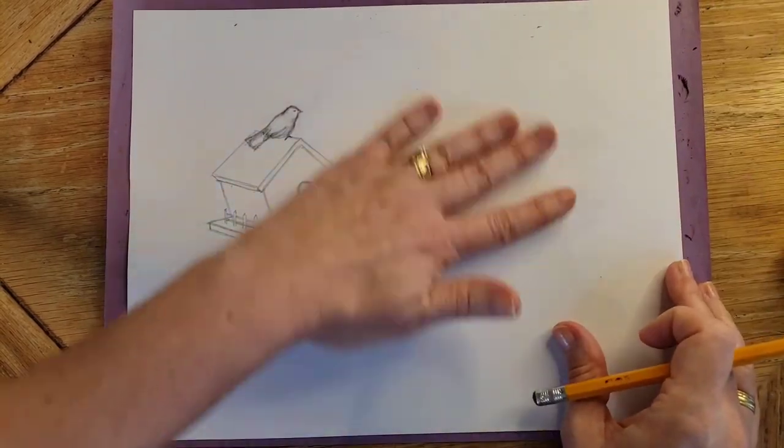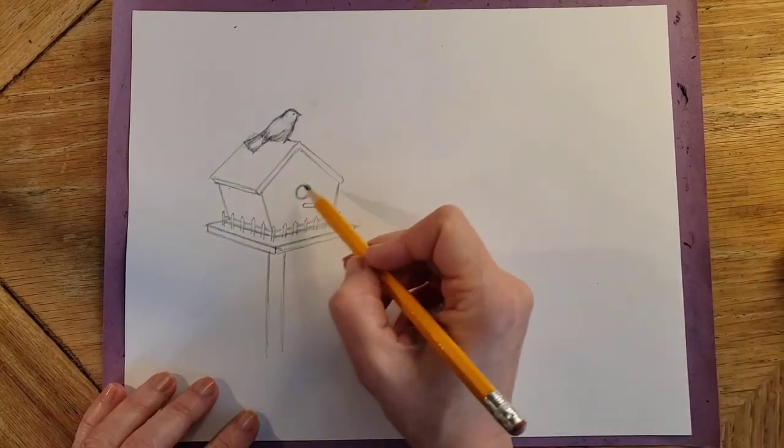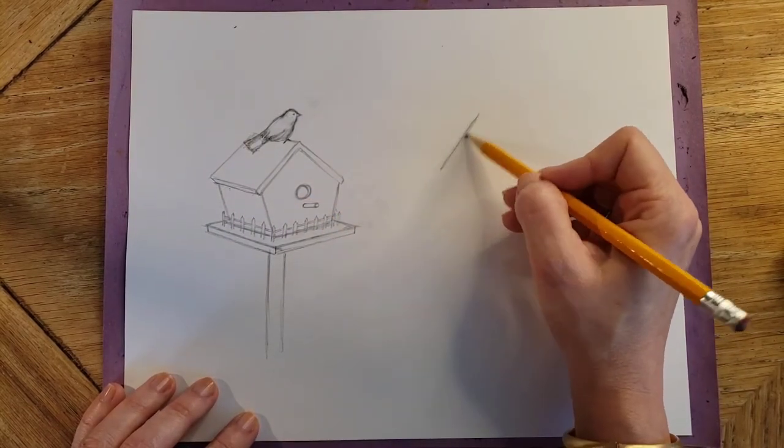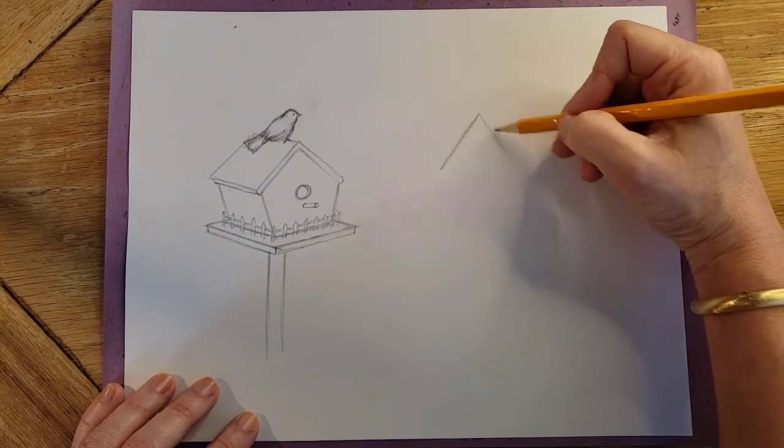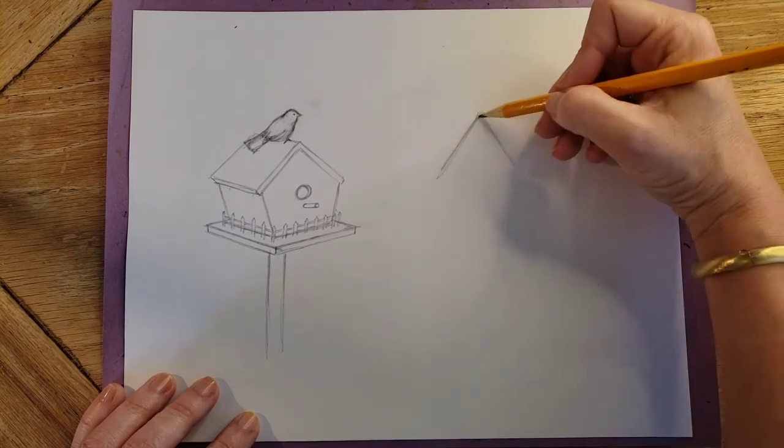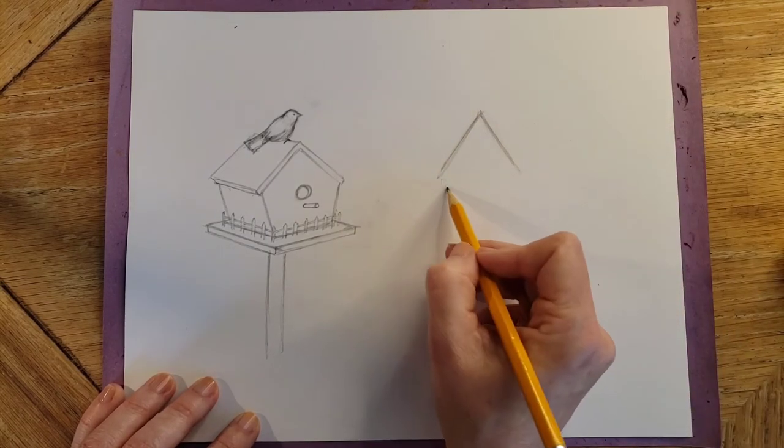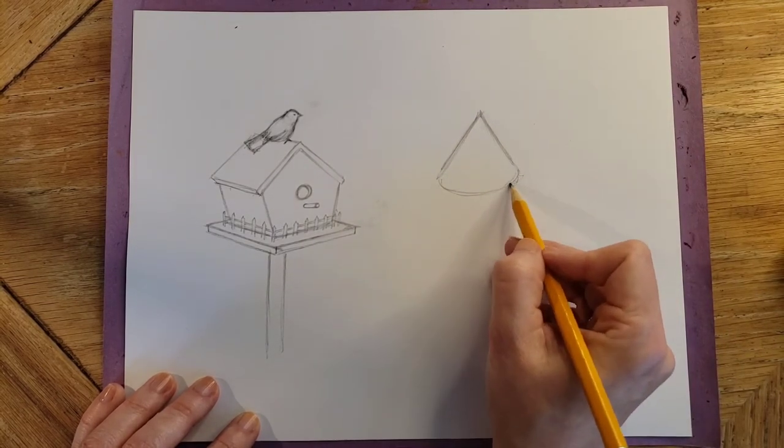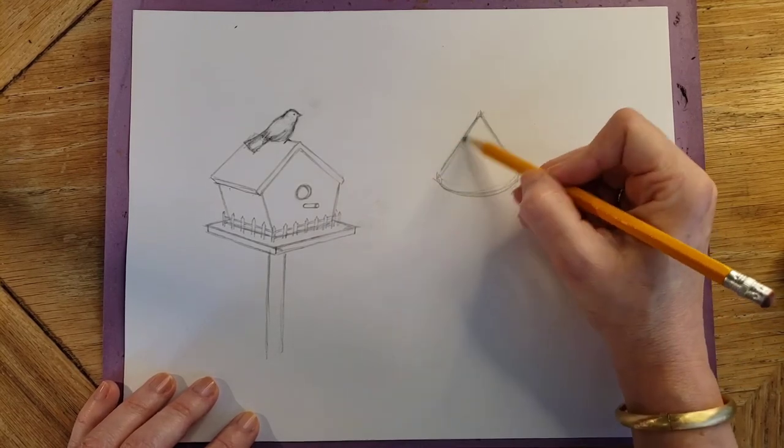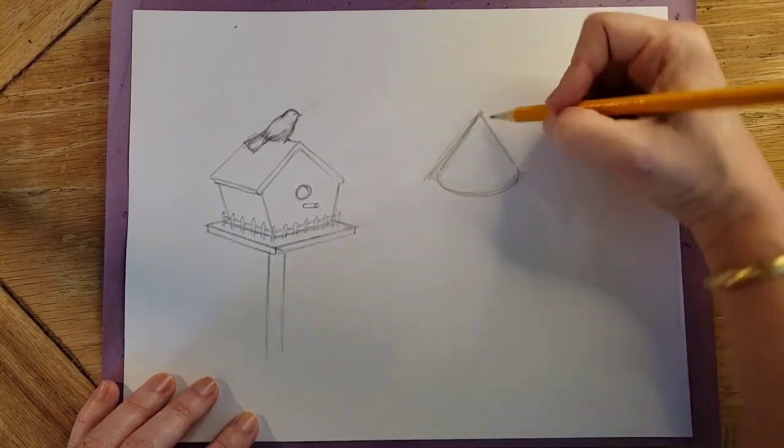Now option number two would be for you to make the top. Now I'm going to make this different. I'm going to make this kind of like an upside down ice cream cone. So I'm going to put this here, but then I'm going to round the bottom like this. Let me make it a little wider.